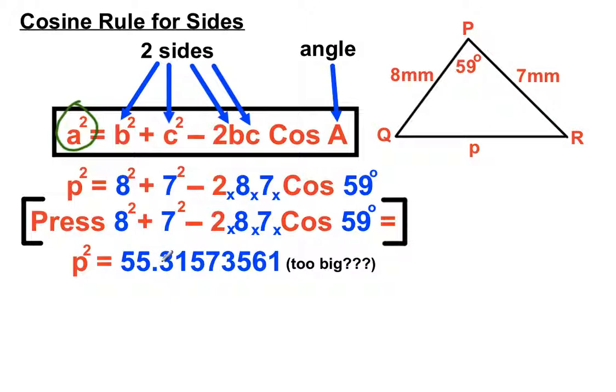So we have P squared, but we don't have P itself yet. So if the number you get seems too big for the triangle, I mean, we had 7mm and 8mm, and suddenly we're looking to have 55 of them, that's a little bit too big for this question.